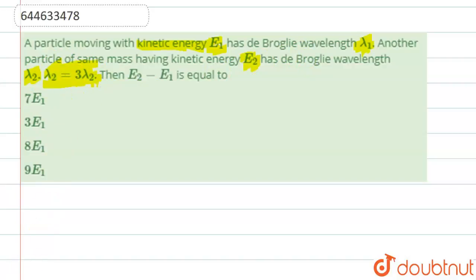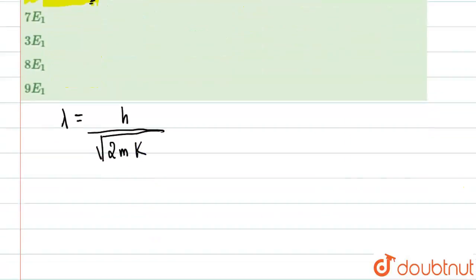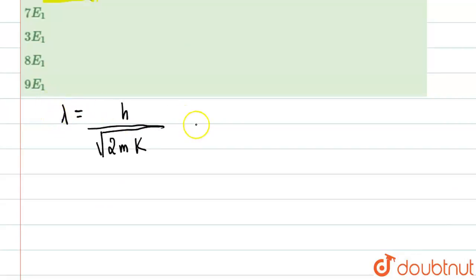Please note there is a correction: this will be λ₁, not λ₂. Now, the de Broglie wavelength equation is: λ = h divided by the square root of (2 × m × KE), where h is Planck's constant, m is mass, and KE is kinetic energy — let's write it as k.